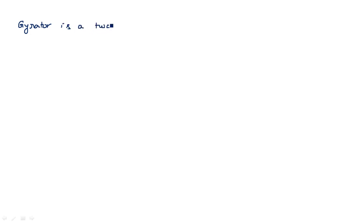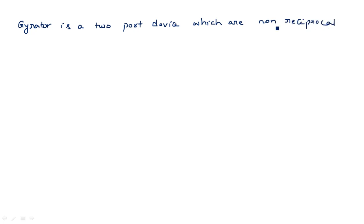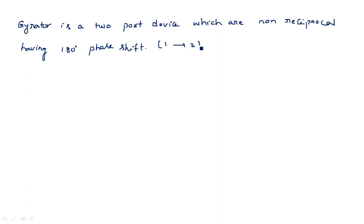The gyrator is a two-port device which is non-reciprocal, having 180 degrees phase shift from the first port to the second port.